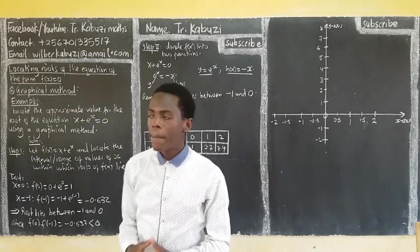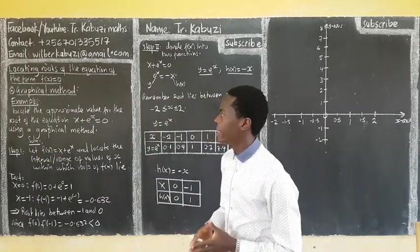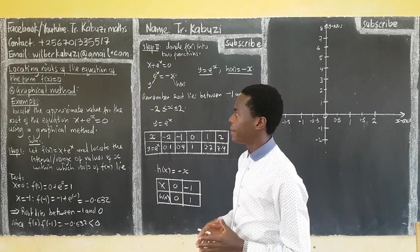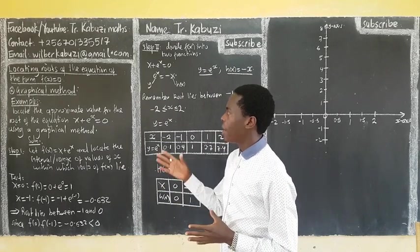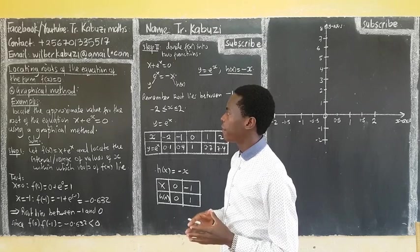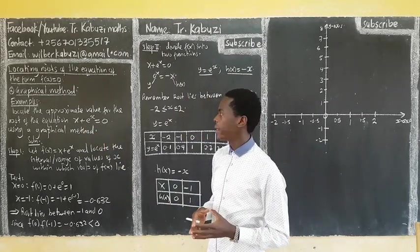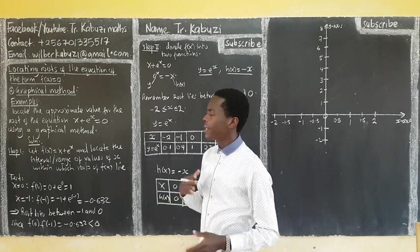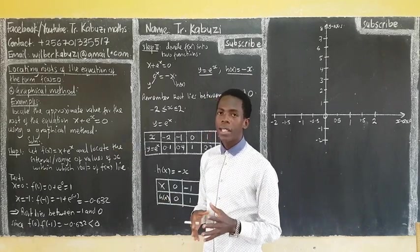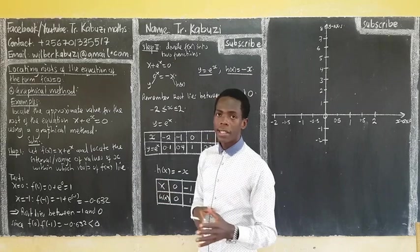Now, let us see my examples about the graphical method. Here, I am giving you this example. Locate the approximate value for the root of the equation using a graphical method. So here, the steps I am going to give you. You can test using the other method of testing.